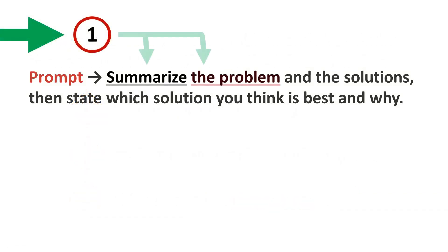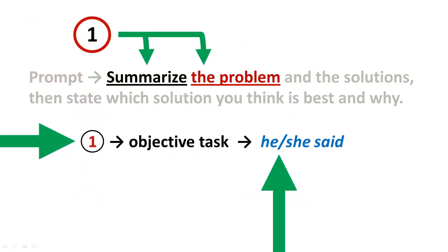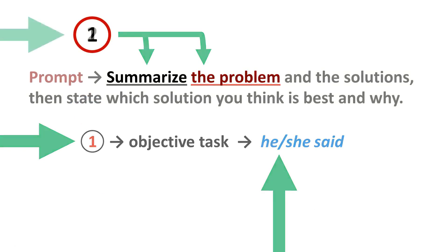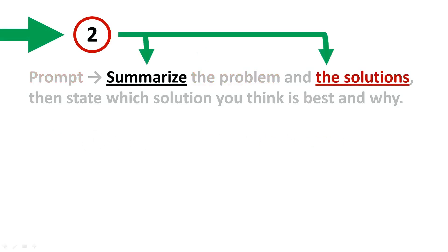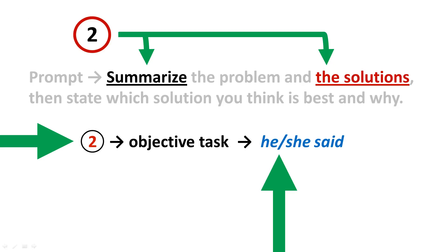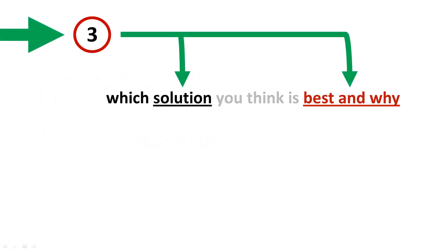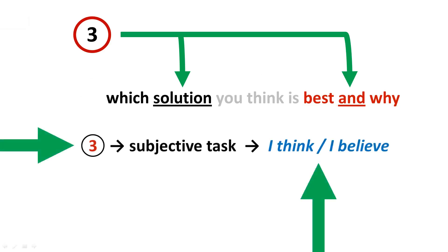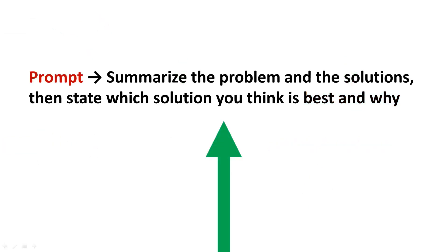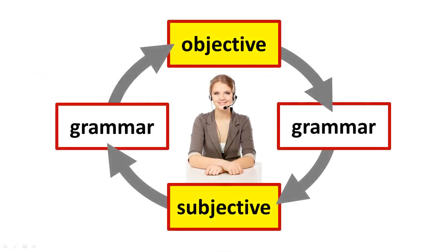First, you must summarize the problem. This is an objective speaking task in which you will use the third person when speaking. Next, you must summarize the two solutions. This is also an objective speaking task in which you will use the third person. Next, you must state which solution you think is best and why. This is a subjective speaking task in which you will use the first person. This task measures your ability to integrate both objective and subjective grammar when speaking.